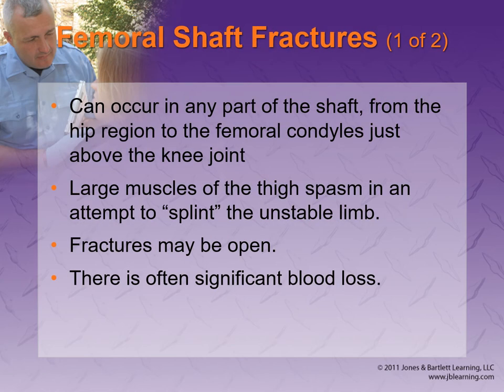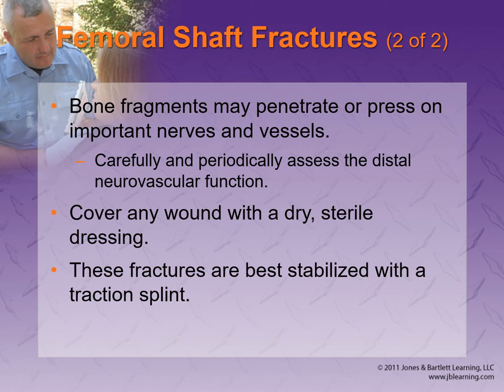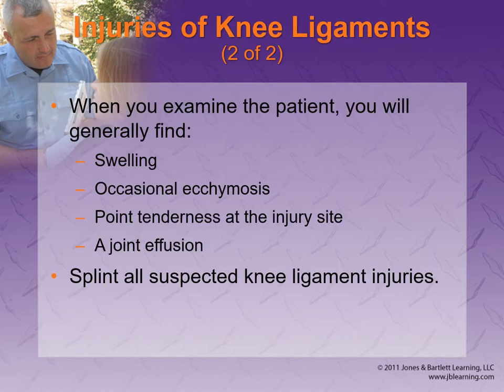Those large muscles of the thigh spasm to splint the bone, which can cause a lot of damage. Bone fragments may penetrate or press into nerves, arteries, and veins, and you can have a lot of internal bleeding. It's preferred to do a traction splint, but if not, just splint it any way you can and take the patient to the hospital as quickly as possible.